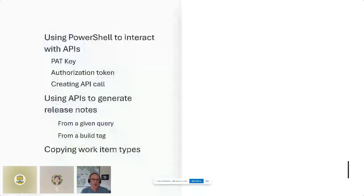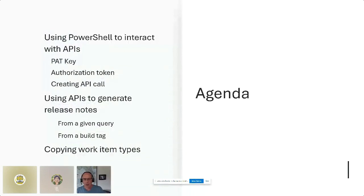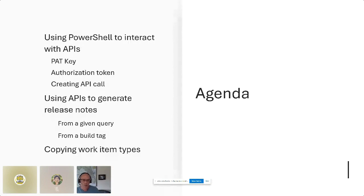Everything I'm going to show you here I'm doing in PowerShell, using PowerShell to interact with the APIs. I'll show you briefly how to create a personal access token, which is the security token you need to talk to the APIs in Azure. We'll briefly talk about authentication and how we create the API calls. From there we'll go into the code showing how to do this from a given query and then from build tags.